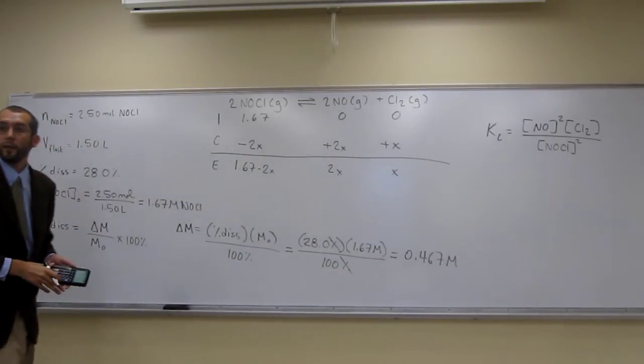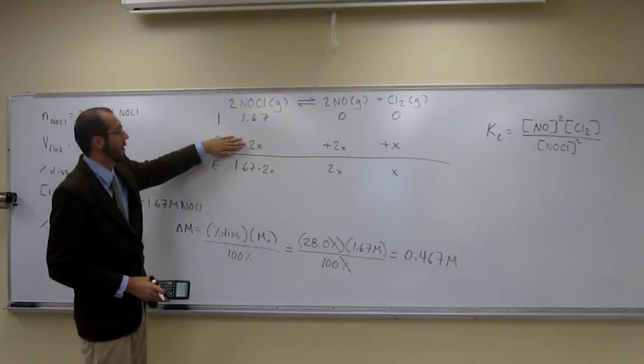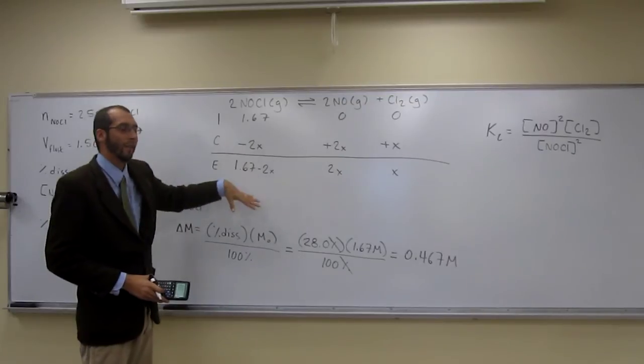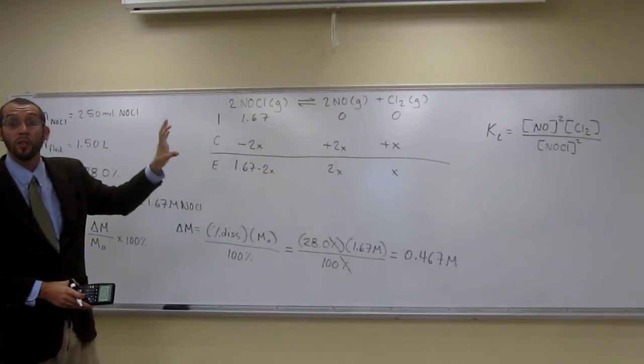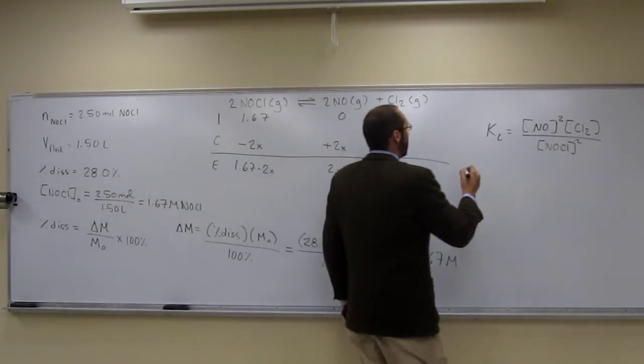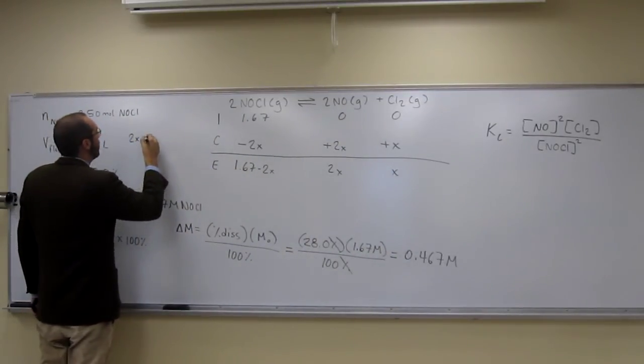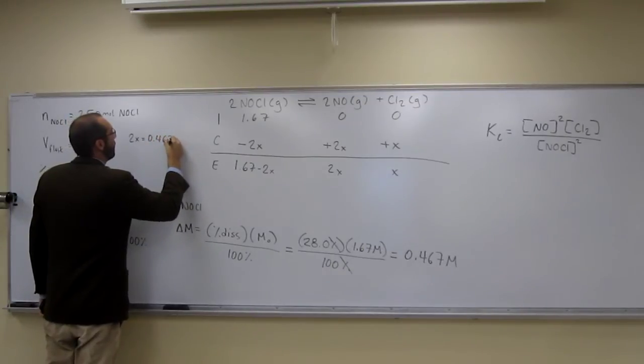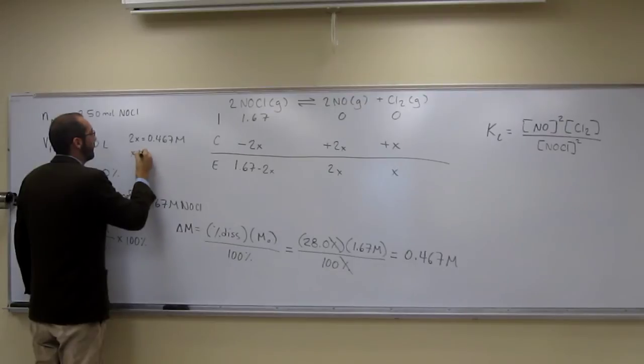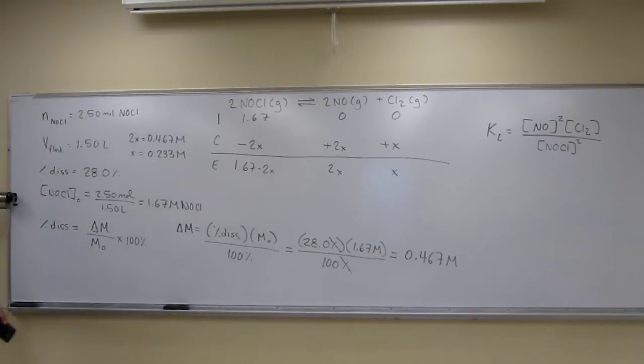So that change is 0.467 molar. It's going to equal 2x. Because that's how much it changed. And we don't have to worry about that negative sign because it's going to be negative on this side, positive on that side. We're just wondering how much it changed. Let's set those two expressions equal to each other. So 2x equals 0.467 molar, so x is going to equal 0.233 molar effectively. You guys okay with that?